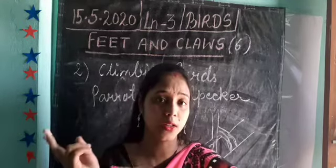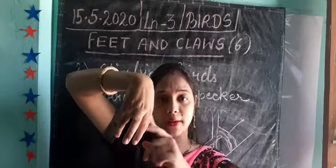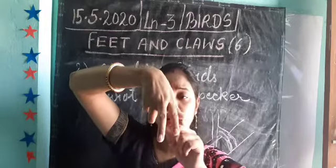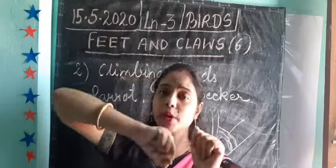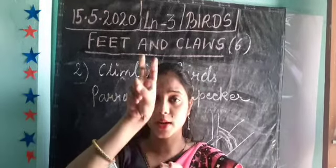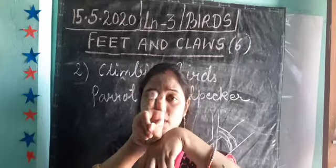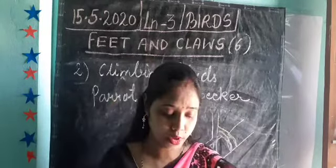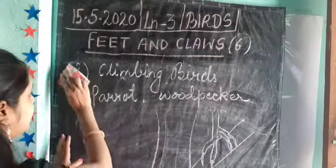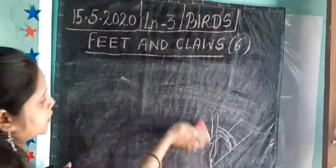So climbing birds have four toes total — two pointing upward and two pointing downward — which is different from swimming birds, which have three toes in front and one at the back. This arrangement helps parrots and woodpeckers to grip and climb up trees.